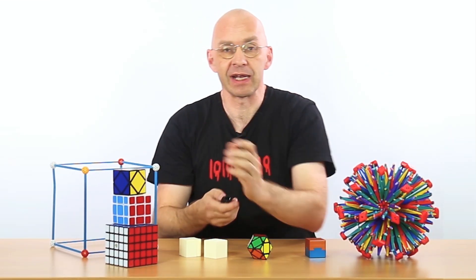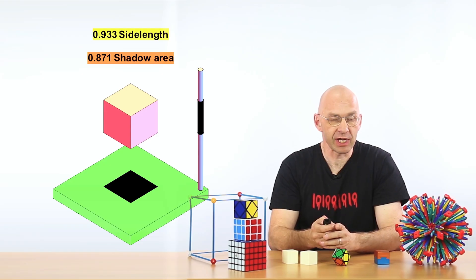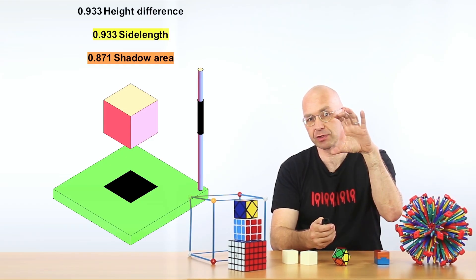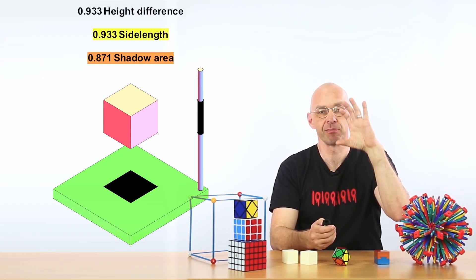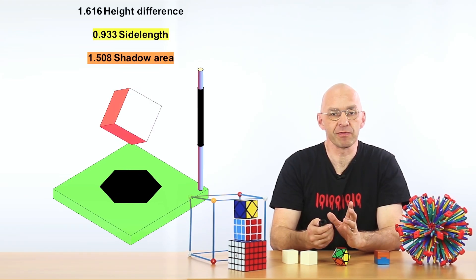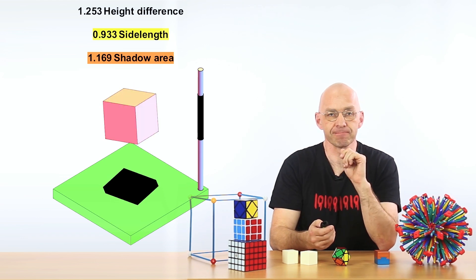Well, I've got a bit of an animation here for you. Alright, so what we're going to do is we're going to measure the area of the shadow, okay? And the other thing we're going to do is we're going to measure the difference in height between the topmost point of the cube and the bottommost point of the cube. As I rotate the cube, the shape of the shadow will change and so will these two numbers, alright?